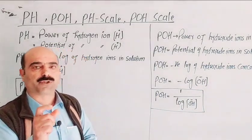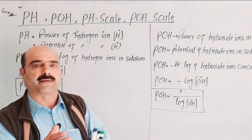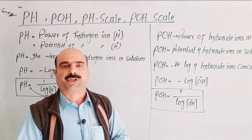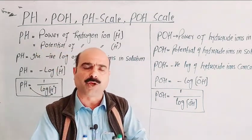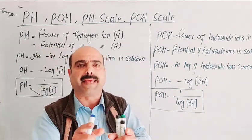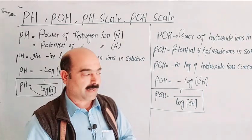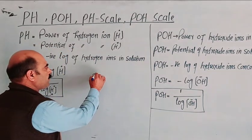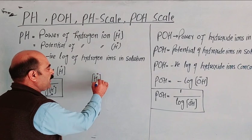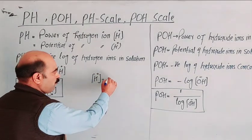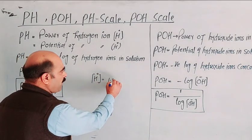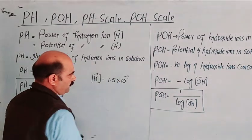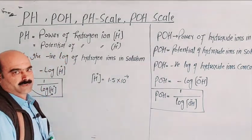Hydrogen ion concentration values in solution are expressed as powers of 10, and these powers are negative — for example, 1.5 × 10⁻⁴. These are very small values, which makes direct comparison difficult.